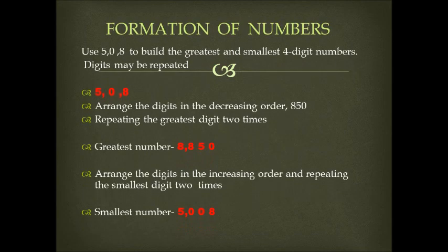Now let us do a few more questions for better practice. Use the digits 5, 0, and 8 to build the greatest and smallest four-digit numbers. Digits may be repeated. Arranging the digits in the decreasing order, we get 8, 5, 0. Repeating the greatest digit two times, the greatest number formed is 8,850. Arranging the digits in the increasing order and repeating the smallest digit two times, the smallest number is 5,008.